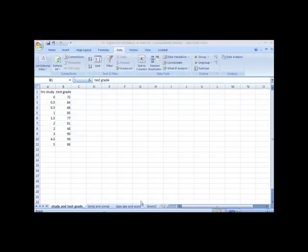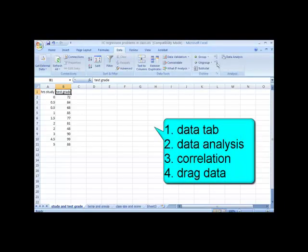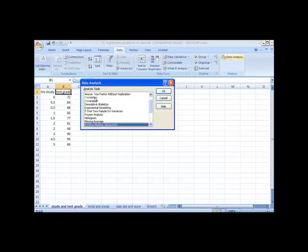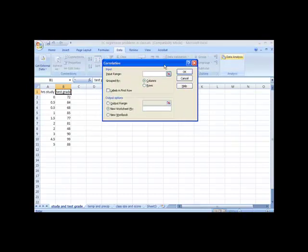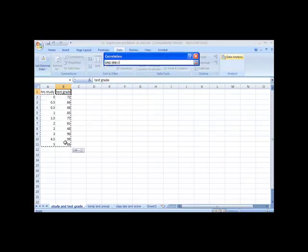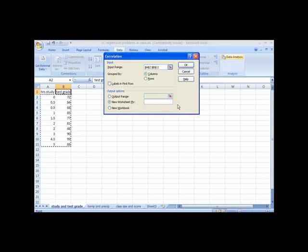If we go into a new Excel file and click on the Data tab, on the far right edge is Data Analysis. Go to what's called Correlation and click OK. The input range is our data. If we want to put this on a new sheet, click OK.